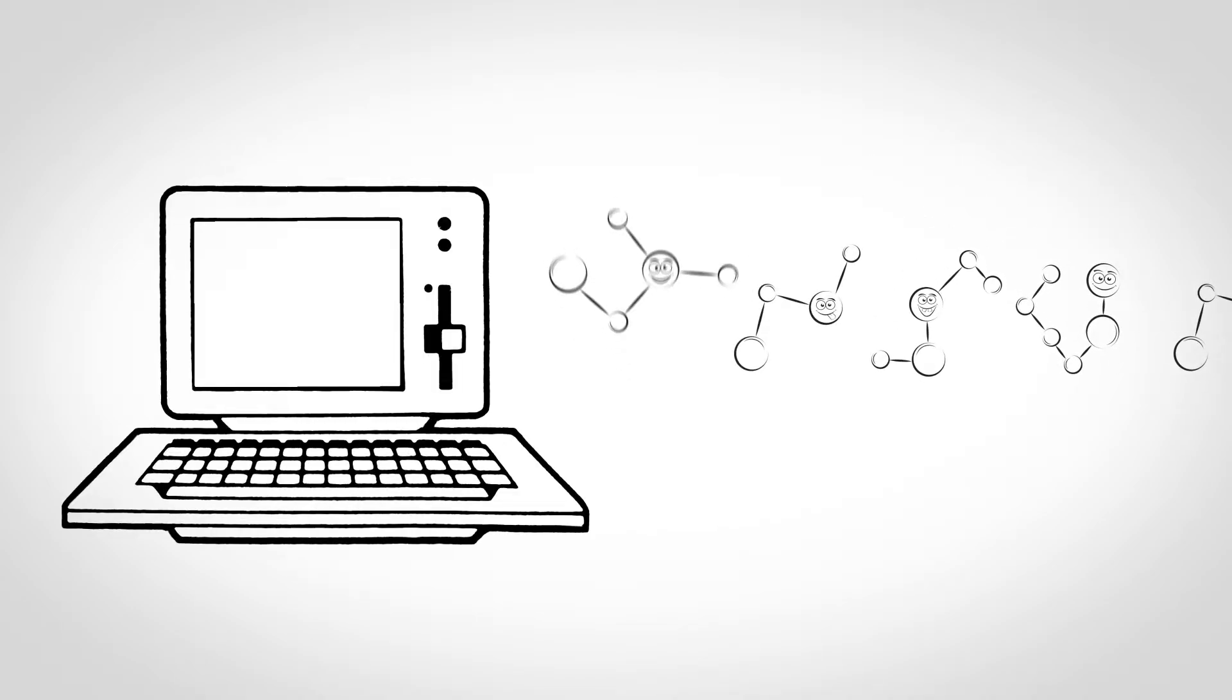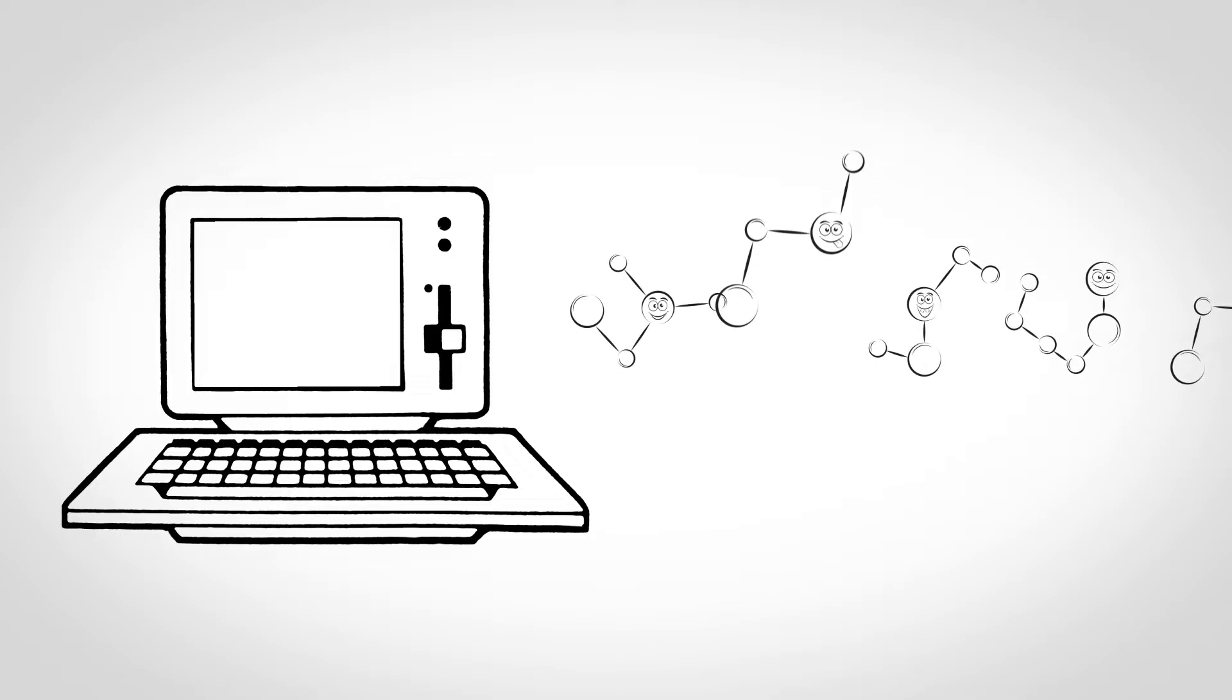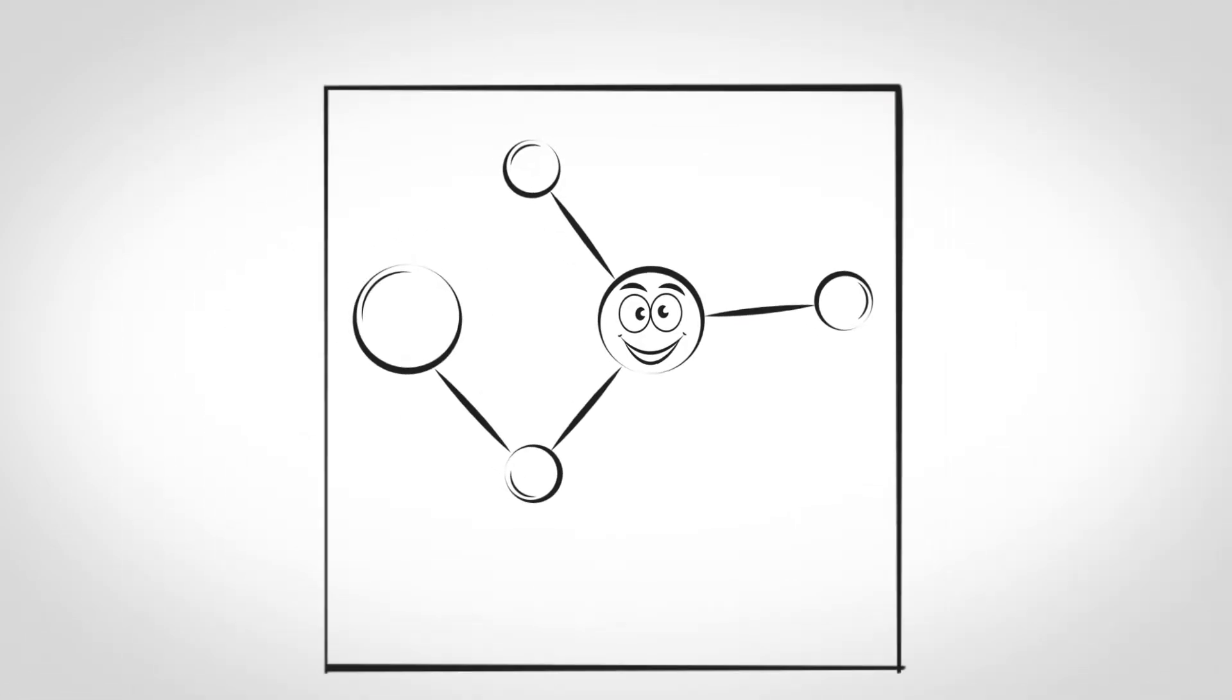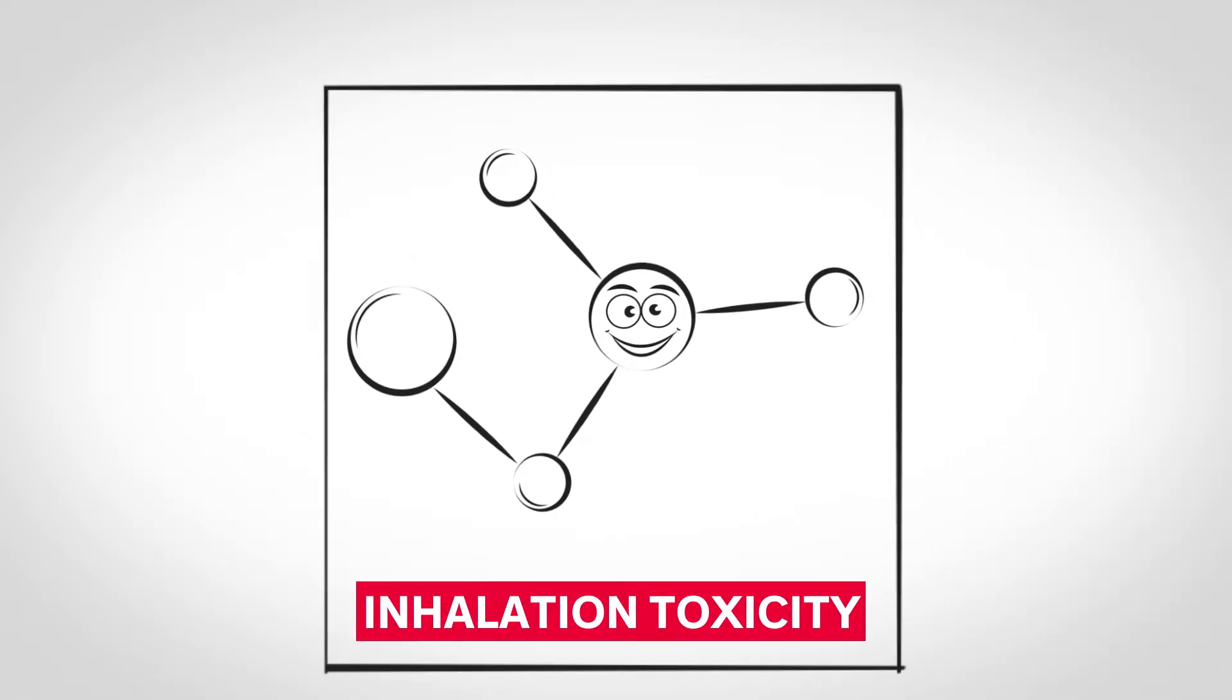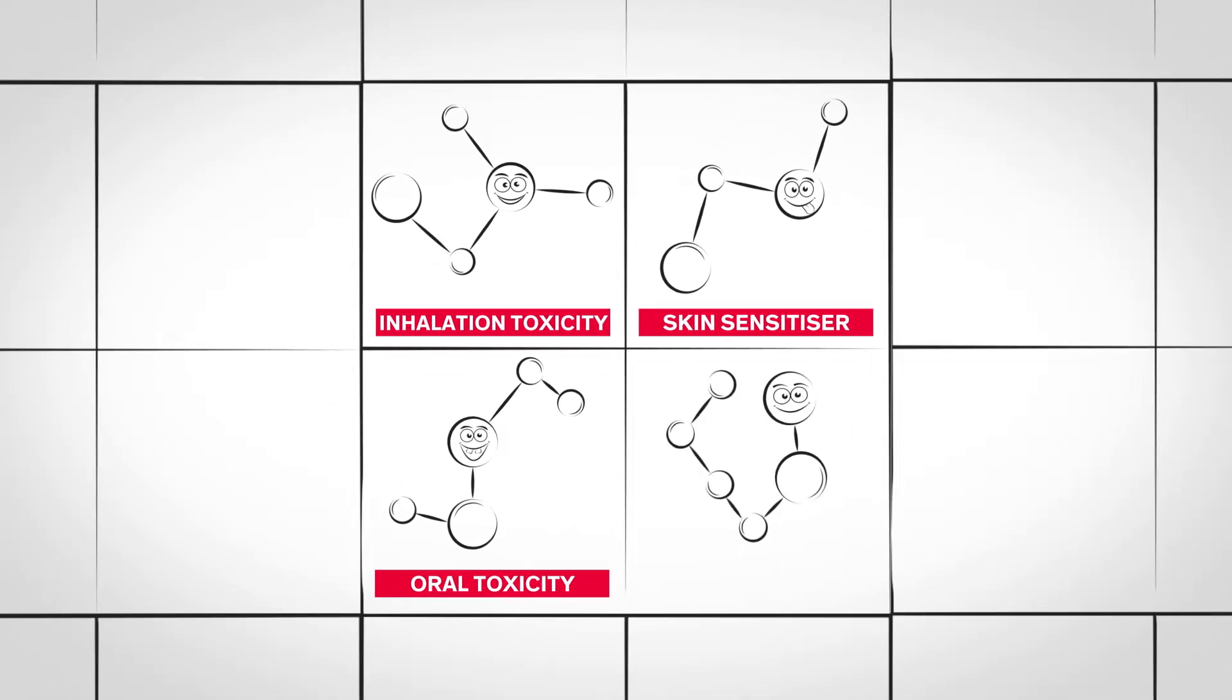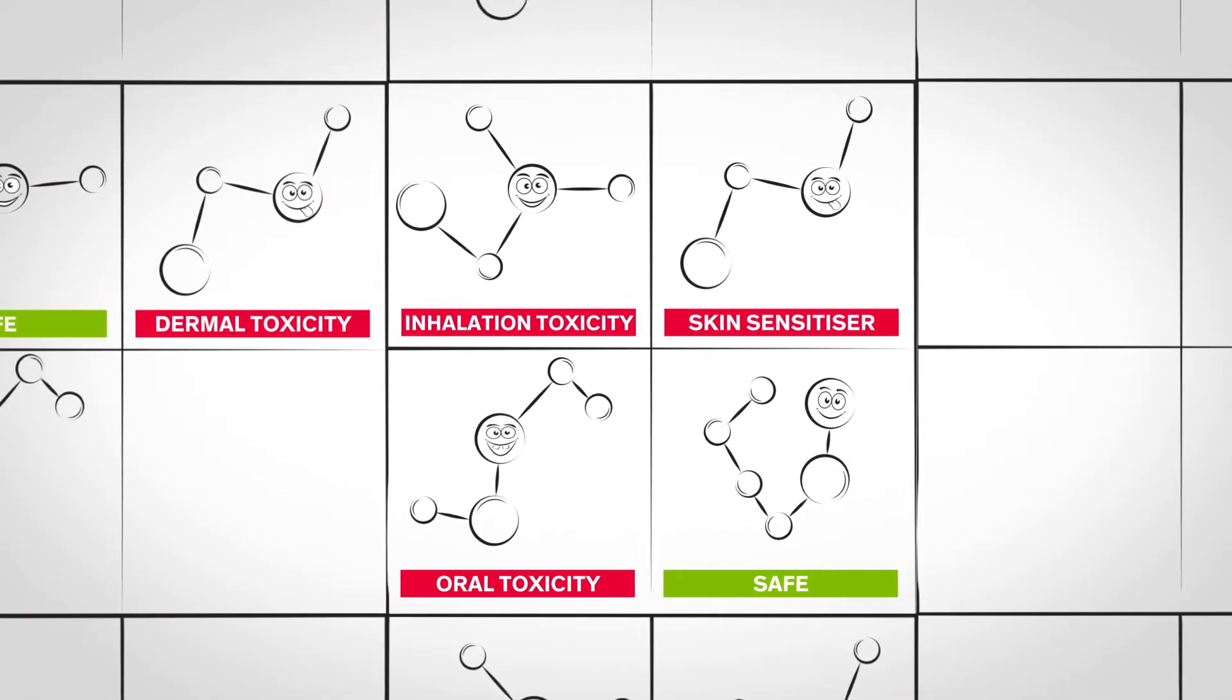Dow scientists run new molecules through a computer model designed to check the structures for potential safety issues. Get in there! This simulation will let Dow scientists know if there are any red flags for molecule safety. We use these red flags to narrow down the number of molecules we make in the lab.